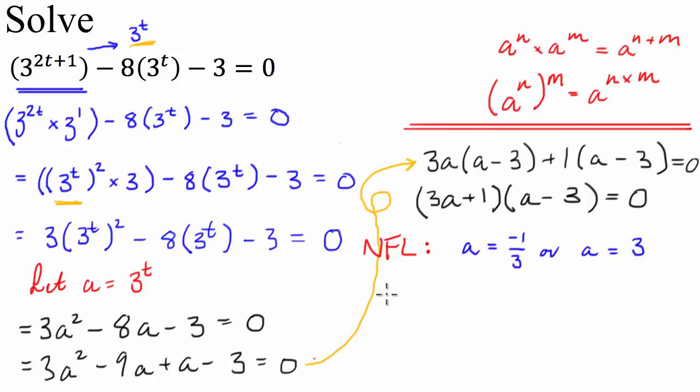So from here we can say that a is equal to negative 1 over 3, or a is equal to 3. So from here, this is where the intuition comes from. Now we've got, therefore, we bring back the 3t. 3 to the power of t equals negative 1 over 3. Now there is no t that exists where 3 to the power of it is going to be negative 1 over 3. So you can say for this one, a solution does not exist.